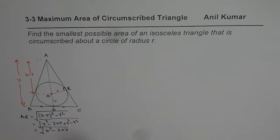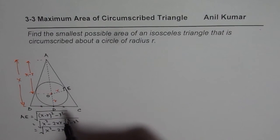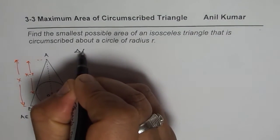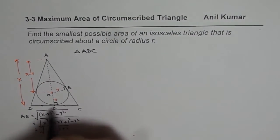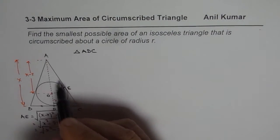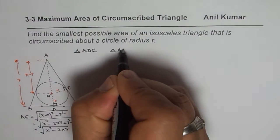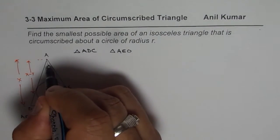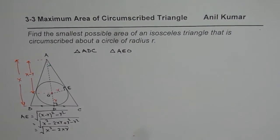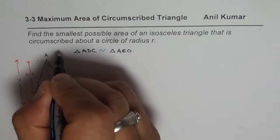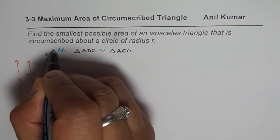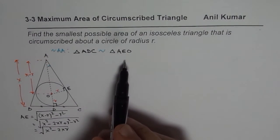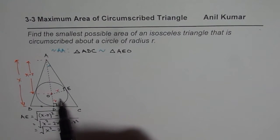Now we'll analyze two similar triangles. Consider triangle ADC with a right angle at D, and triangle AEO. In both triangles, there is one right angle and a common angle A. Because of the angle-angle property, these two triangles are similar. Once the triangles are similar, we can write that the ratios of their sides are proportional.